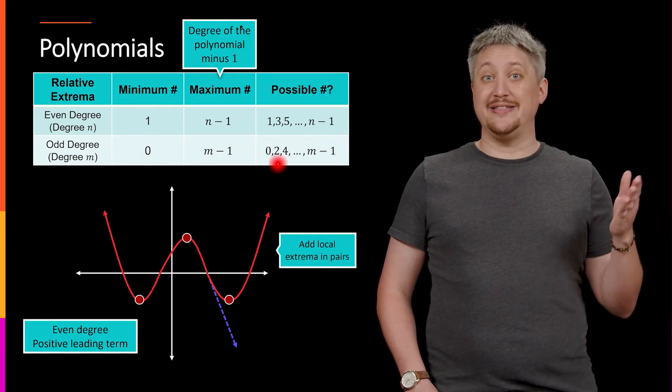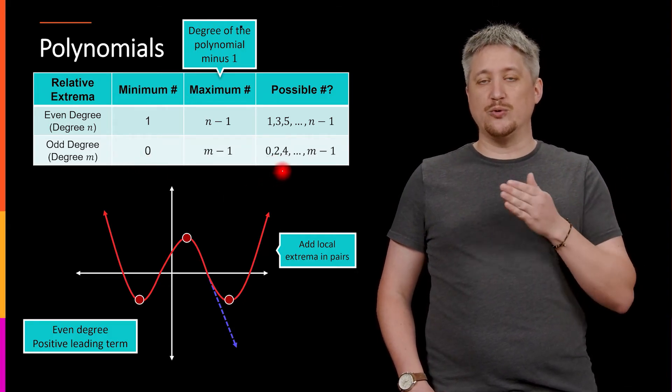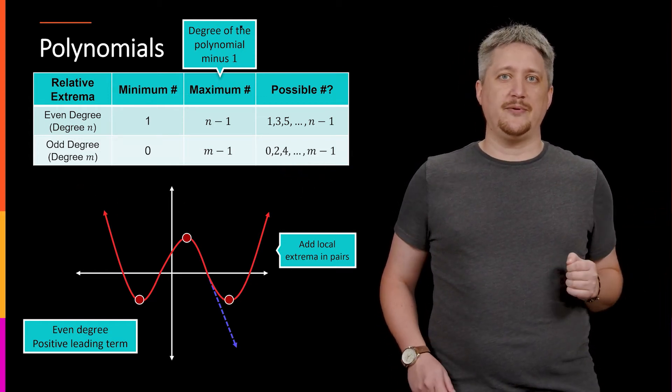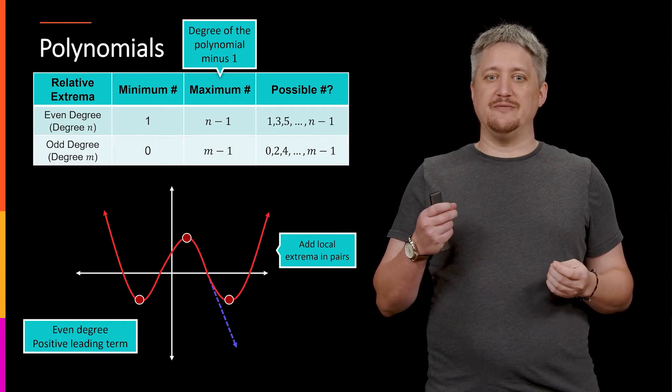that means I can have zero and then adding two, zero, two, four, six, eight, up to whatever the degree is minus one.